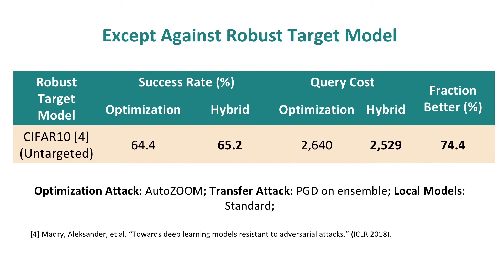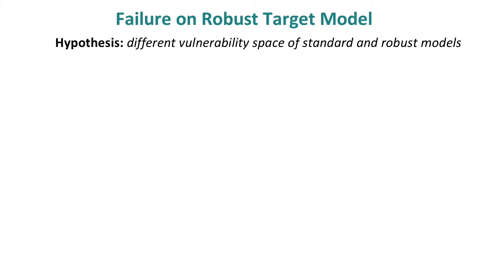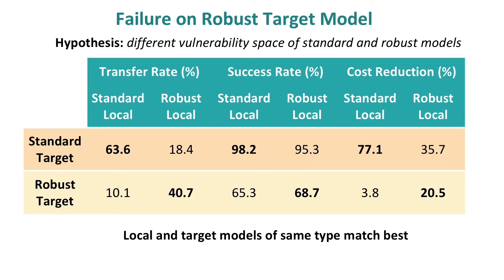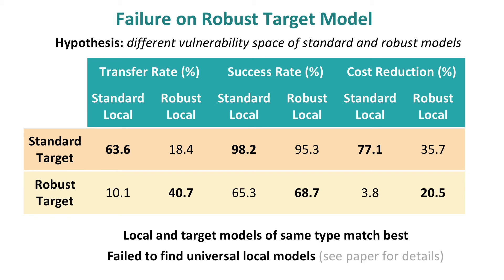One exception occurs when we attack target models trained to defend against adversarial examples — we call these robust models. From the table, we can see there is limited improvement with our hybrid attack when local models are still standard models. We hypothesize the reason might be that the vulnerability spaces of standard local models and robust target models are different. To verify this, we trained robust local models and tried all combinations. Performance is best when the target and local models are of the same type: robust target with robust local, and standard target with standard local. Mixing them does not help.